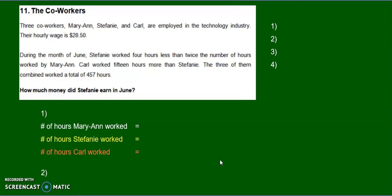Okay, why don't you try this question here. So here we have three co-workers, Marianne, Stephanie, and Carl. They're employed by the technology industry. Their hourly wage is $28.50. So every hour they make $28.50.